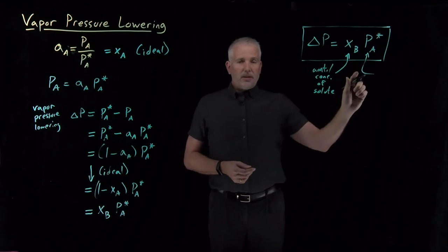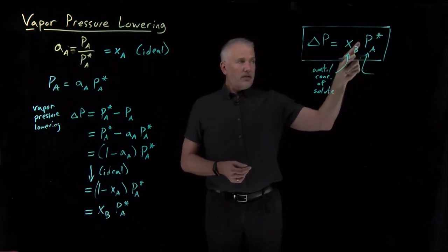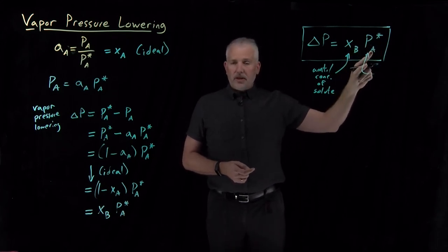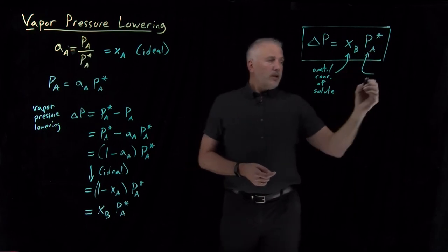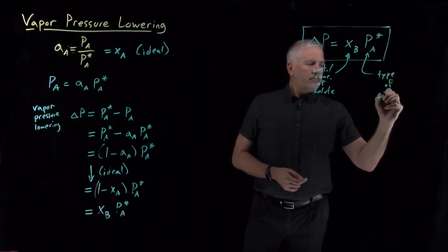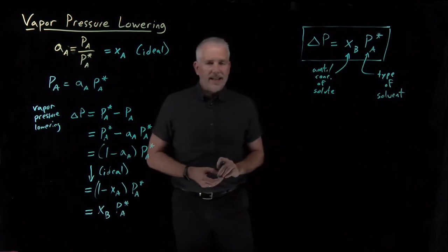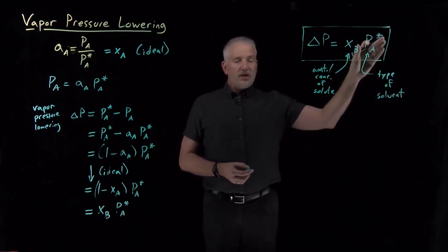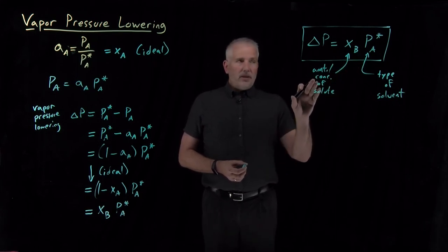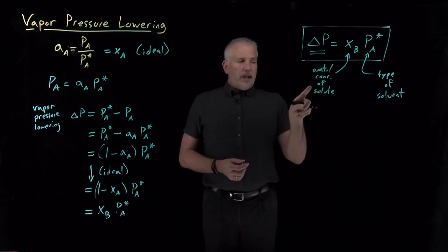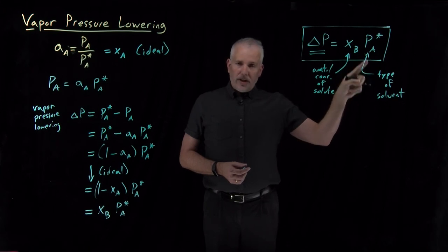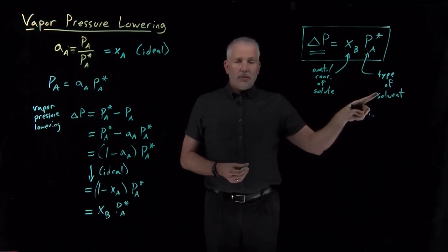On the other hand, it does depend on the identity of the solvent. The vapor pressure of water is 24 torr, while the vapor pressure of acetone, ethanol, or some other volatile solvent is a different value — each solvent has a different vapor pressure. So the general pattern is: some property depends on how much solute is dissolved and on the chemical character of the solvent, but not on what the solute is.